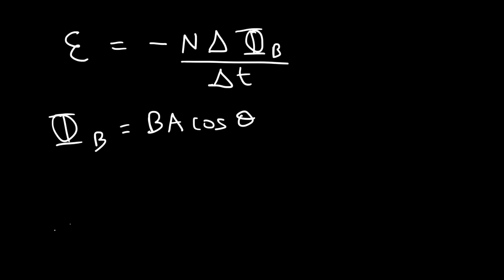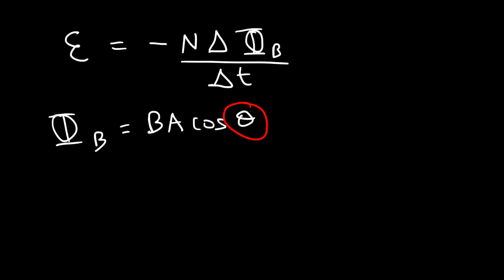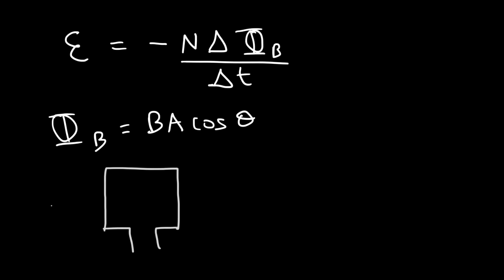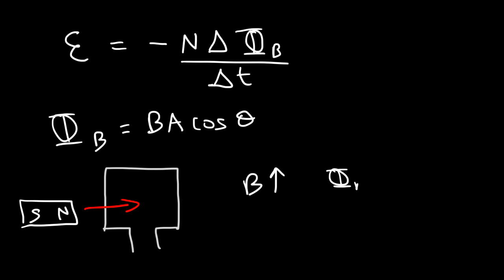There are three ways to induce an EMF — three ways to acquire a change in flux. You can change the magnetic field, change the area of the coil, or change the angle of the magnetic field with respect to the normal line. For example, if we take a square coil of wire and move a magnet into it, the magnetic field is increasing, which leads to an increase in flux going into the coil, causing an induced EMF.